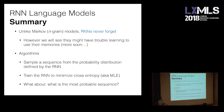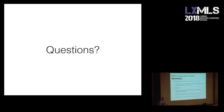Unlike Markov or n-gram language models, RNNs never forget. However, they do sometimes have trouble learning to use their memories — we'll see that shortly. We showed a simple algorithm for sampling a sequence from the probability distribution defined by an RNN, and we can train the RNN to minimize cross entropy, which is also known as maximum likelihood estimation. An interesting question to keep in mind: what if you wanted to find the most probable sequence of words in a model? That's actually a subtly difficult problem.